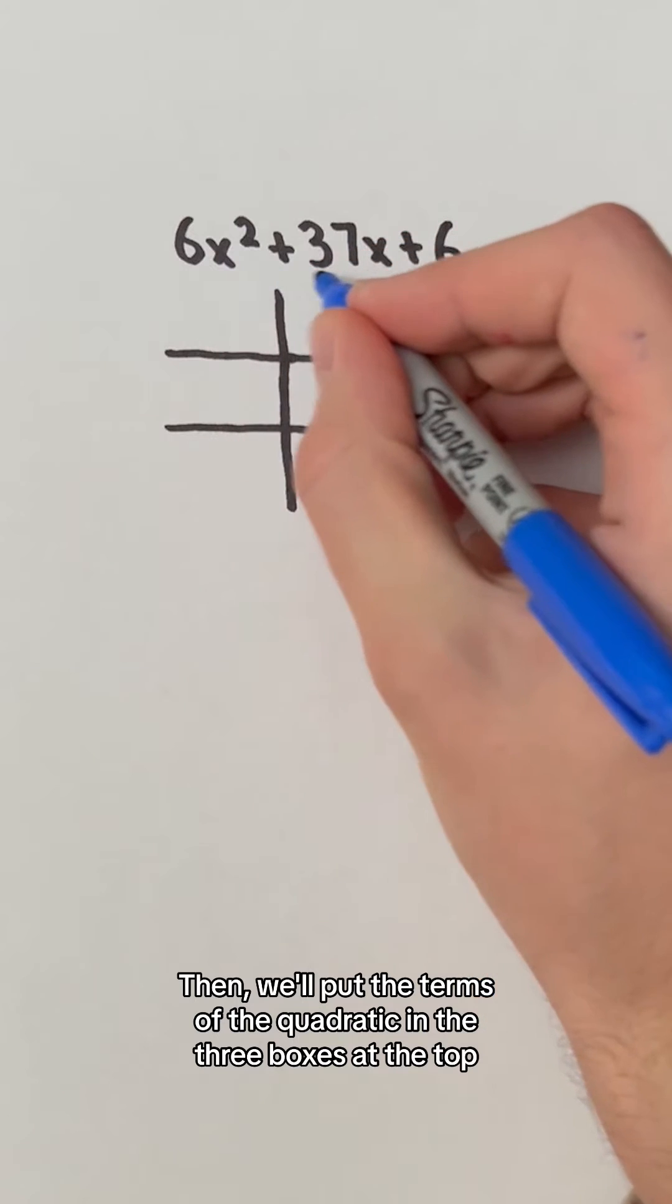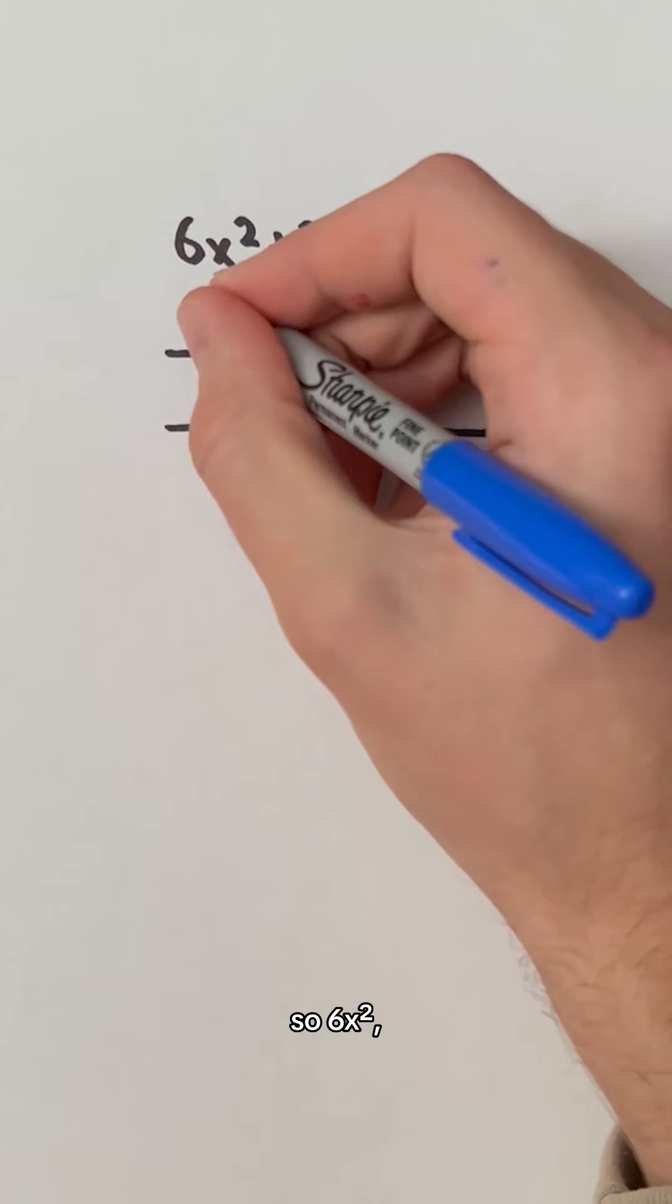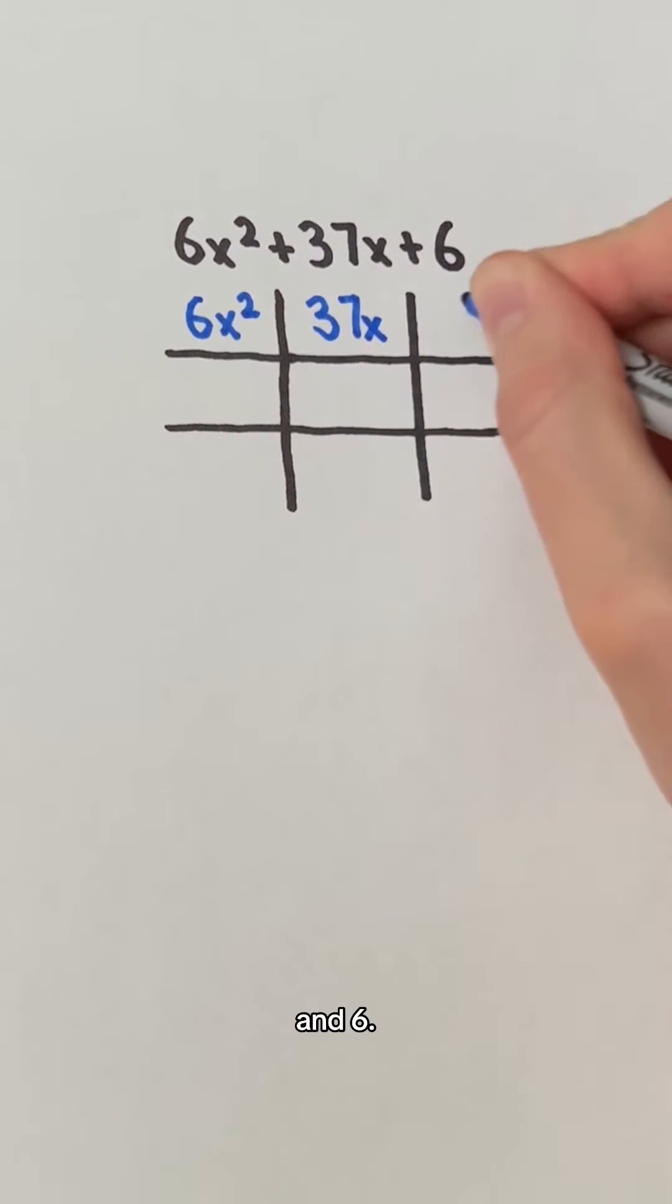Then, we'll put the terms of the quadratic in the three boxes at the top from highest degree to lowest degree, left to right. So 6x squared, 37x, and 6.